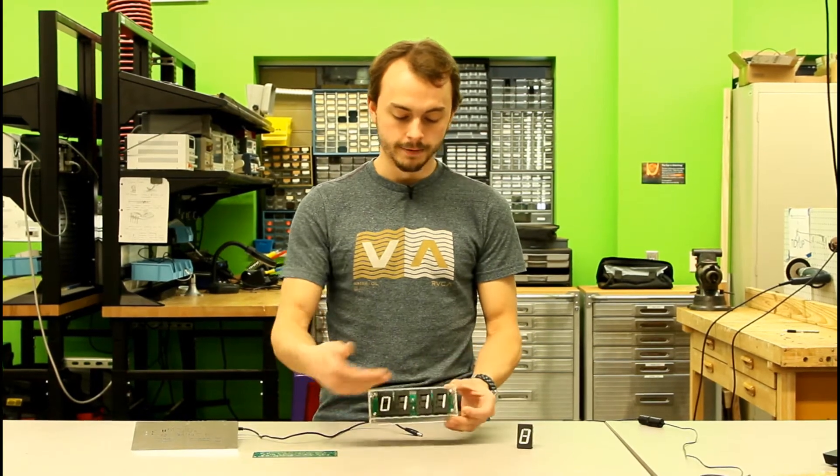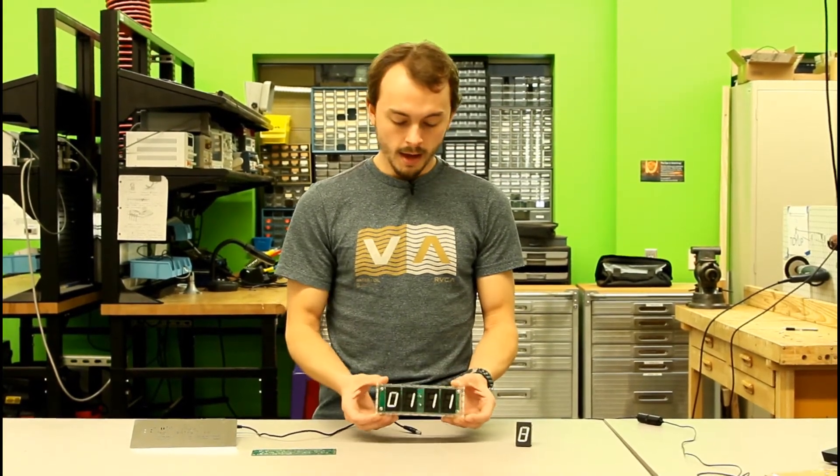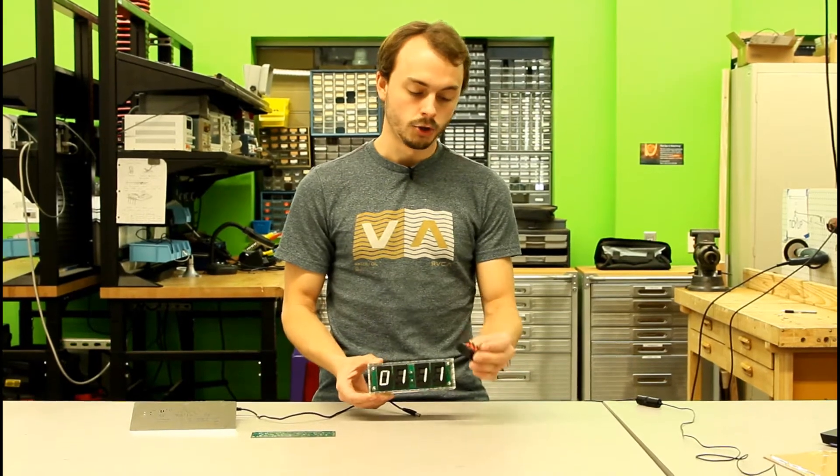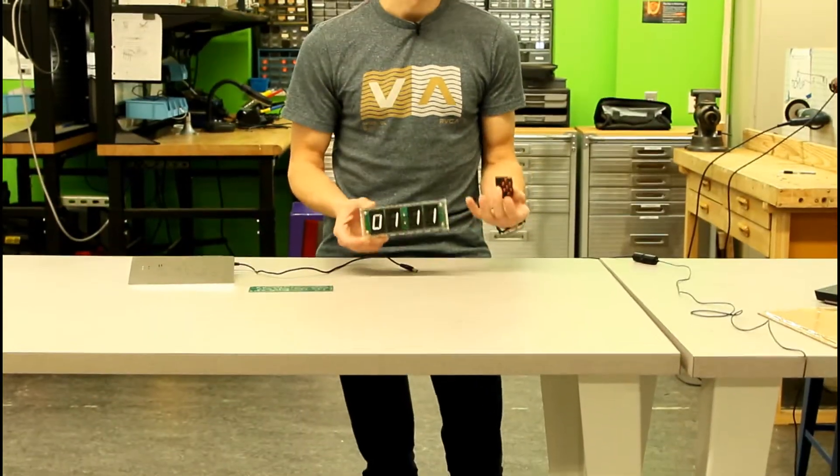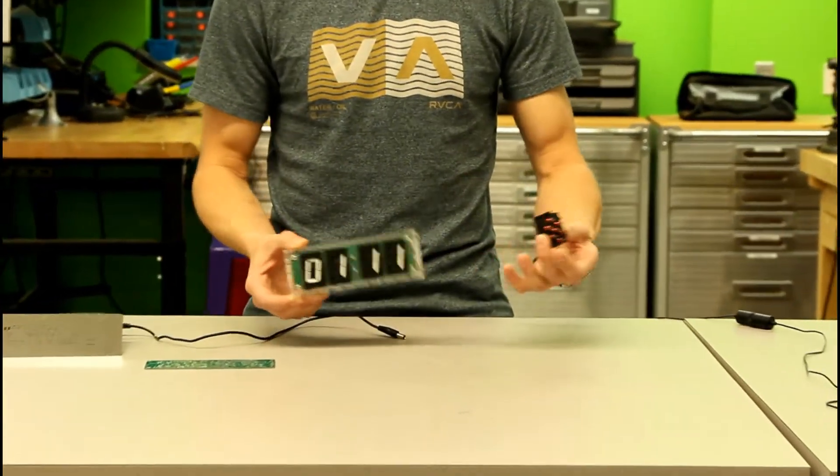This clock uses four of these digits, obviously, and these digits are a little hard to work with. To control all seven electromagnets, you have to have a complicated control circuit, and I designed that whole system discreetly myself.